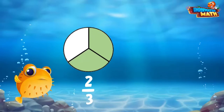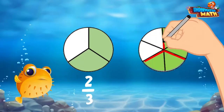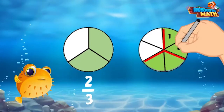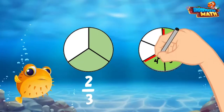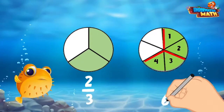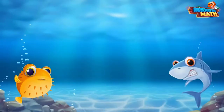Let's take a look at these two models. We have two thirds. If we wanted to make an equivalent fraction, we would want to use another model that is a multiple of three to determine the number of pieces we should use. Let's use sixths, because it is a multiple of three. We can still see our thirds inside of the sixths model. Now, how many sixths are equivalent to two thirds? We can see there are two sixths inside of one third, and four sixths inside of two thirds. Two thirds is equivalent to four sixths.